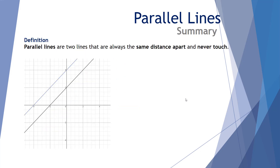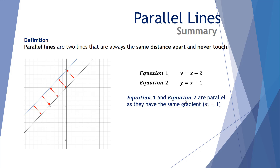Let's finish our summary of parallel lines. Lines that have the same distance apart are parallel. For example, equation 1: y equals x plus 2, and equation 2: y equals x plus 4 are parallel as they have the same gradient of 1. So these two equations are parallel as they have the same gradient.